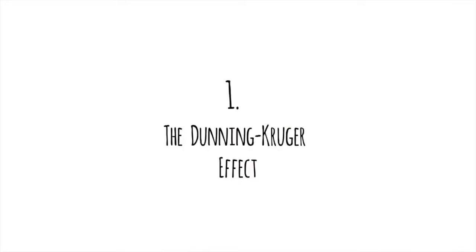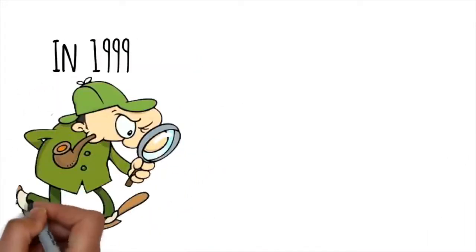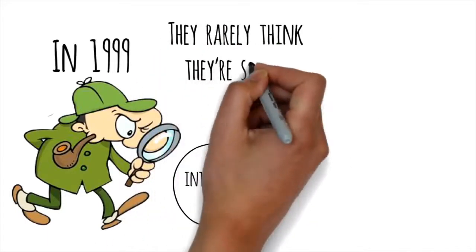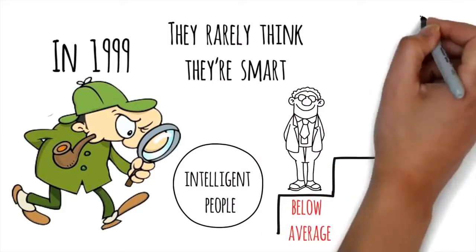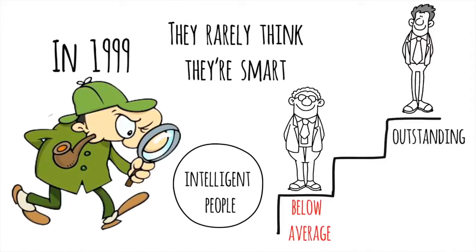The Dunning-Kruger Effect. In 1999, two social psychologists discovered something about intelligent people. They rarely think they're smart. In fact, they often rank themselves way below average. On the other hand, people with low intelligence do the exact opposite. They almost always overestimate their rank by a long shot.